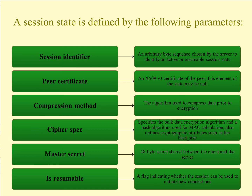A session state in SSL is defined by the following parameters. We have the session identifier — a unique identifier for that session. The peer certificate, which is an X.509 version 3 certificate, which we've already discussed. We have a compression method; ZIP was one that we discussed. CipherSpec, which specifies the bulk data encryption algorithm and the hash algorithm used for MAC calculation, ensuring we're communicating with who we think we are. The master secret is a 48-byte secret shared between the client and the server. And it is resumable — a flag indicating whether the session can be used to initiate new connections.